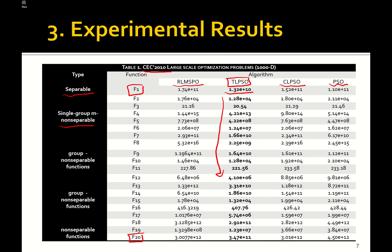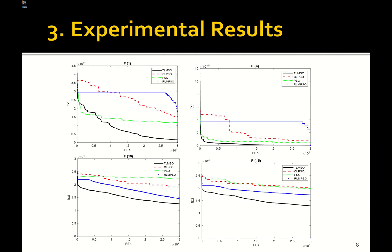In another comparison, we examine the convergence curves of the proposed two-layer optimizer, shown in black. The results show that our algorithm achieves faster convergence compared to other algorithms, due to the micro swarm and the local search ability, which enable fast convergence.